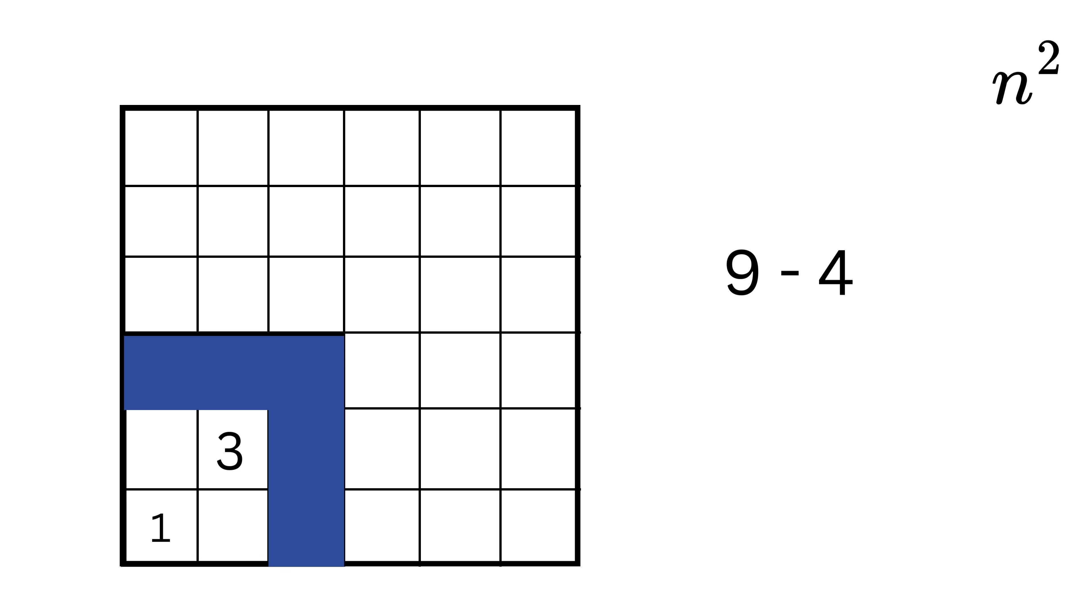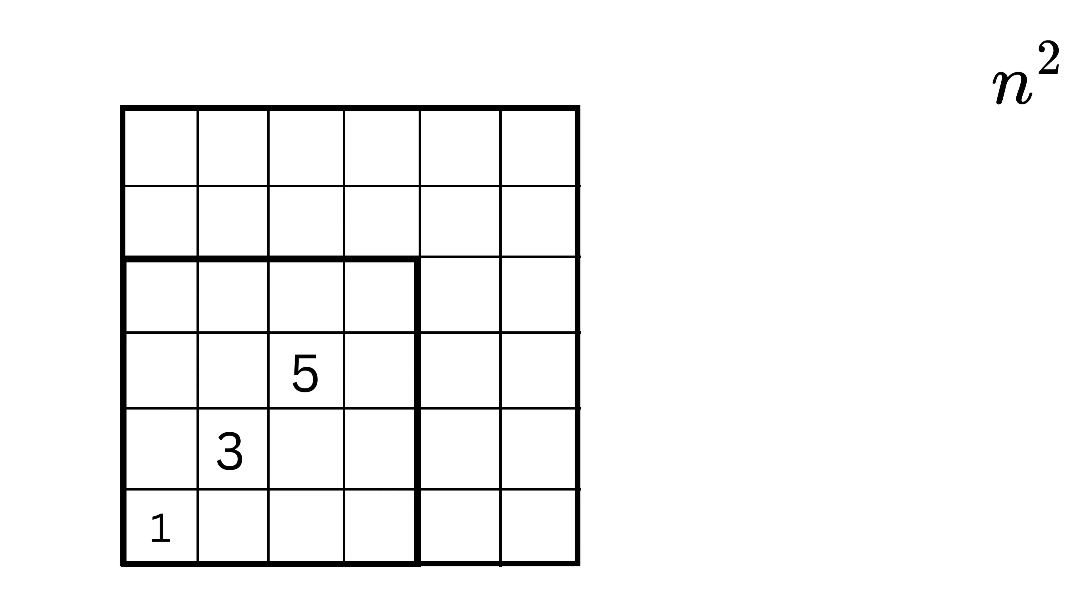Similarly, for this fourth layer, we will be left with 16 - 9 = 7 square units area. Keep doing this until we completely fill the big square.